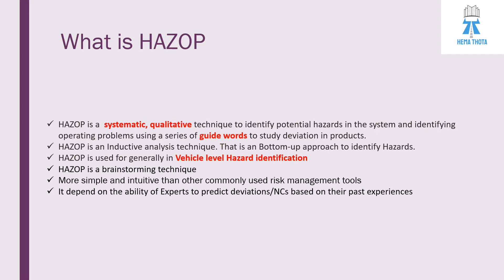What is HAZOP? HAZOP is a systematic qualitative technique to identify potential hazards in the system and identify operating problems using a series of guide words to study deviation in the products. It is a systematic and qualitative approach — we will find out and identify a problem when we do this activity. There are a set of words particular to HAZOP analysis, and with those guide words we can identify potential hazards in the system and operating problems which cause deviations in the products.